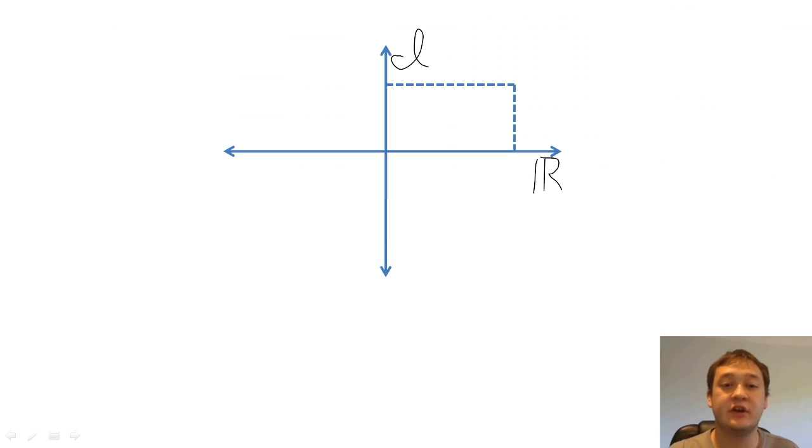Complex numbers are typically represented in two ways: Cartesian coordinates and polar coordinates. In Cartesian coordinates, we represent a complex number z as an ordered pair with a real part and an imaginary part.